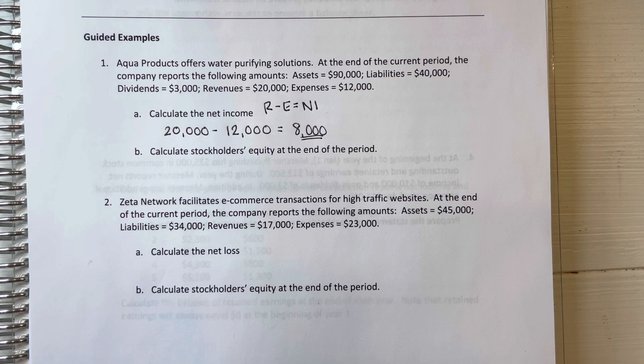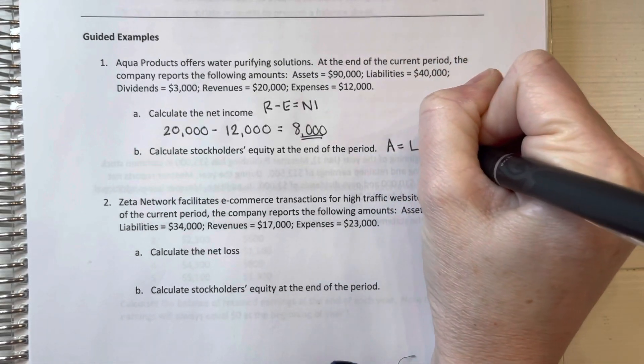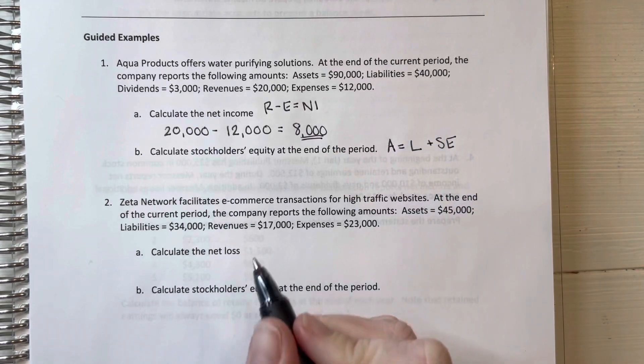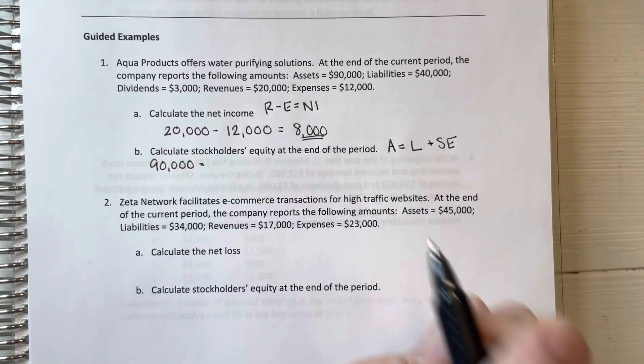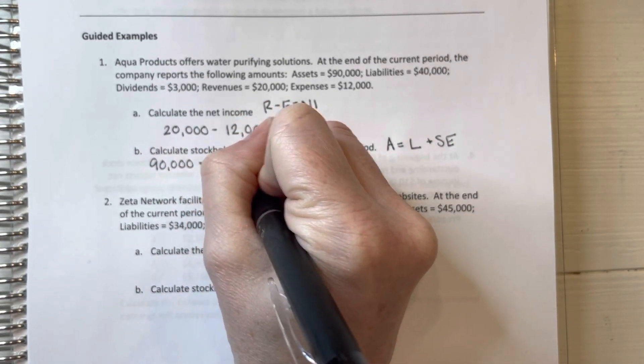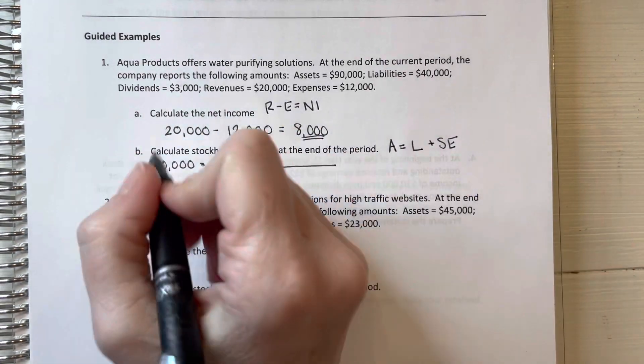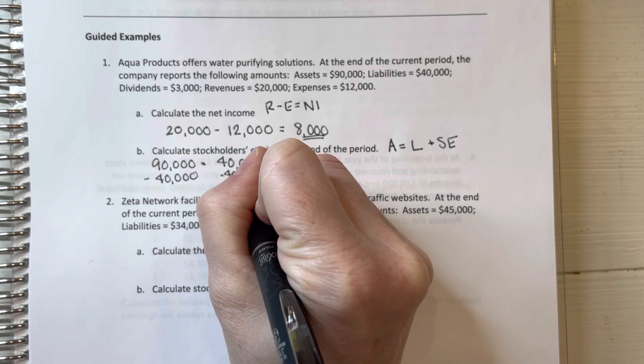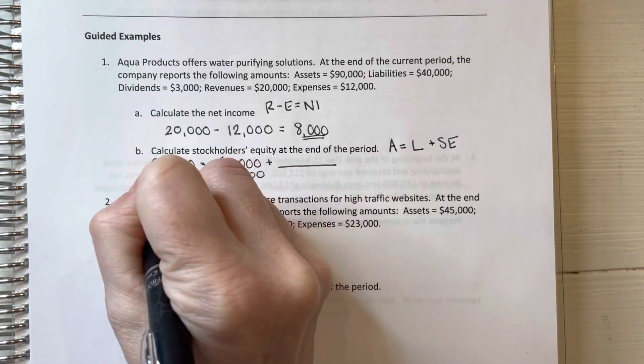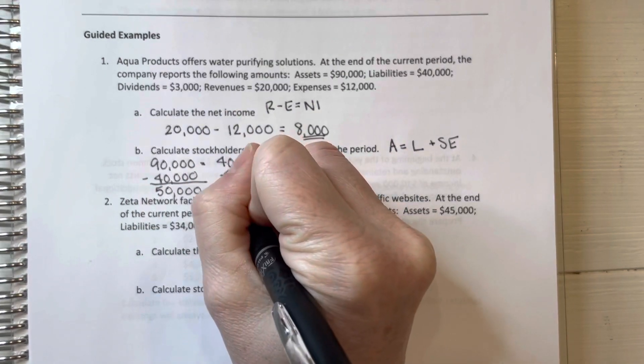Now let's calculate the stockholders' equity. Remember that stockholders' equity is part of the accounting equation. So that is assets equal liabilities plus stockholders' equity. So if our assets are $90,000, our liabilities are $40,000, we need to determine what our stockholders' equity is. We can do this by subtracting $40,000 from both sides. So we have $50,000 equals our stockholders' equity.